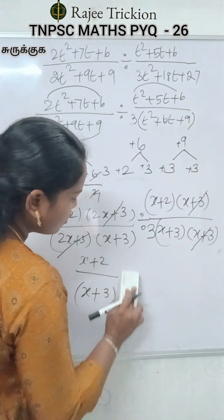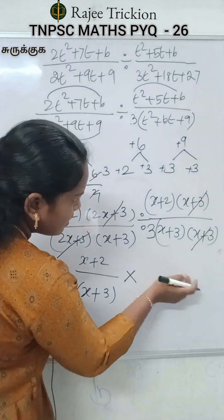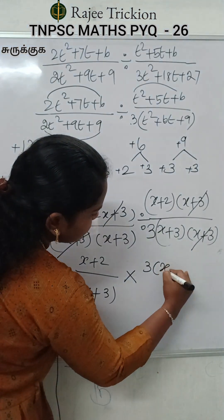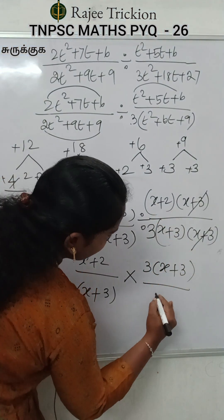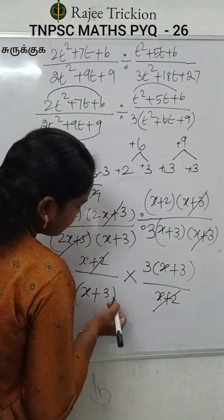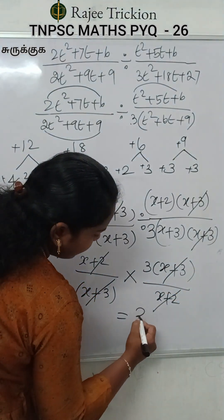If you want to do this, you will need to do multiplication. This is the reciprocal. 3 into x plus 3 divided by x plus 2. So x plus 2 cancels and x plus 3 cancels. So the final answer is 3.